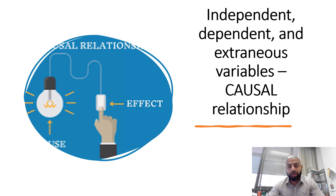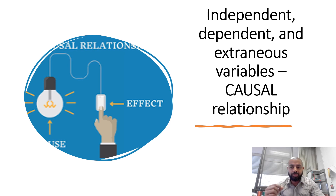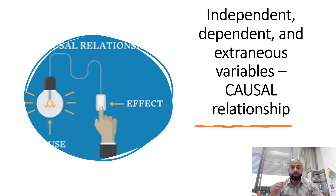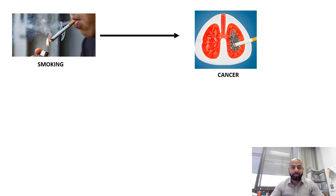Hi everyone. We often talk about using a dependent or an independent variable in our research studies, but we have to ask ourselves: do we really understand what they mean and how they get affected by other factors — variables we often classify as extraneous variables. In today's video, I will take an example of a causal relationship research and show you what can be an independent variable, a dependent variable, and how we can have extraneous variables and how to address them.